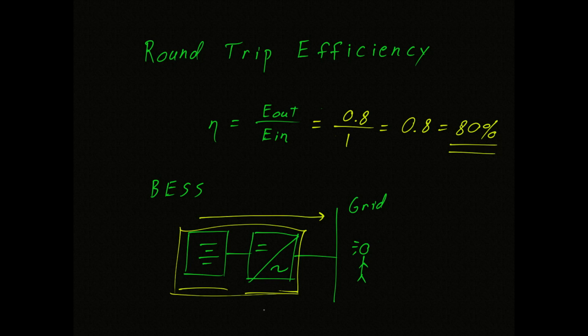Just an example, if we assumed a 95% efficiency on the converter, and if we assumed the 95% efficiency on the battery, we could just multiply those two together, we would see that the resulting efficiency is about 90%.